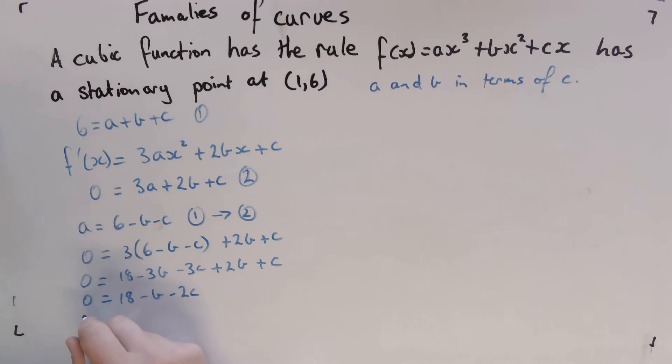Add b across, we're going to get b = 18 - 2c.